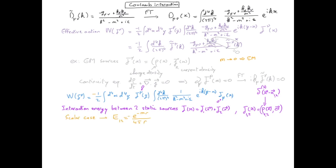But now in the case of an interaction between sources mediated by a vector field, we have a plus sign in front of the effective action, and therefore what we will have is again a Yukawa interaction, but this time it will be repulsive.